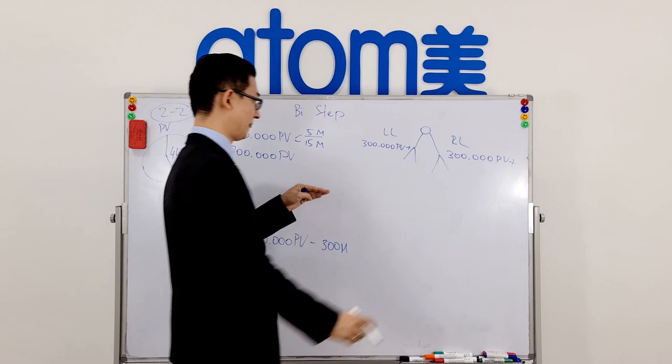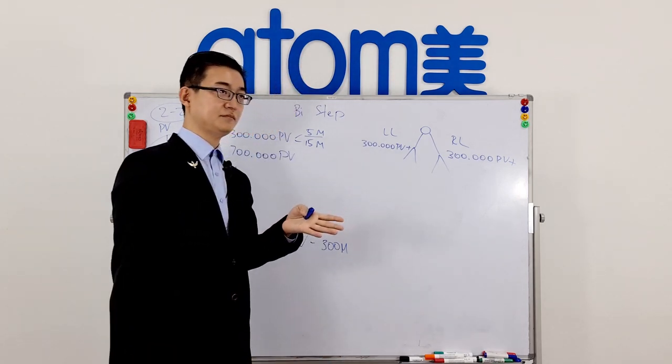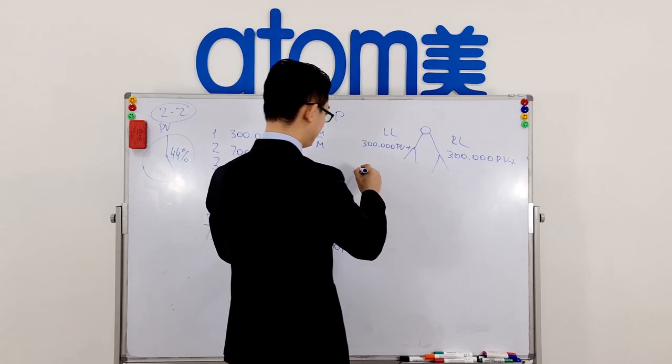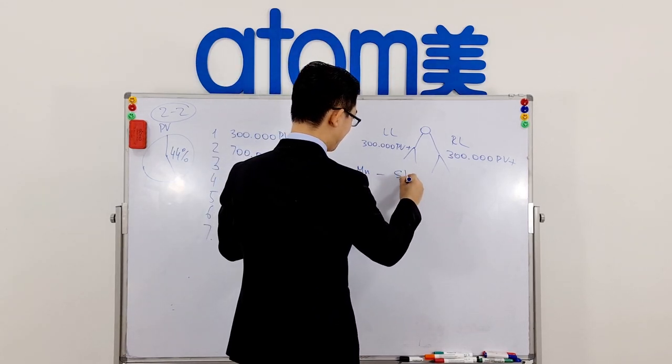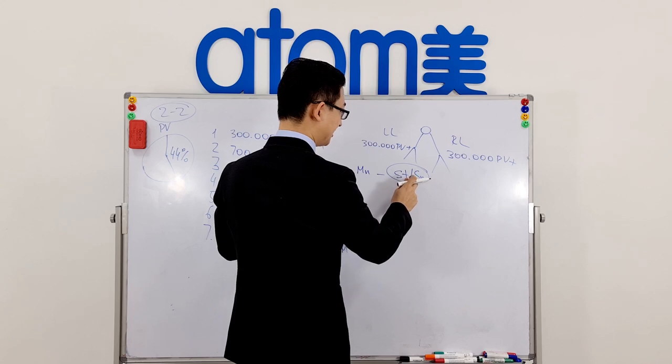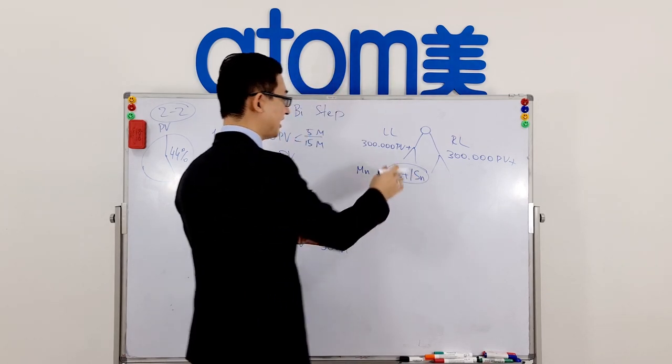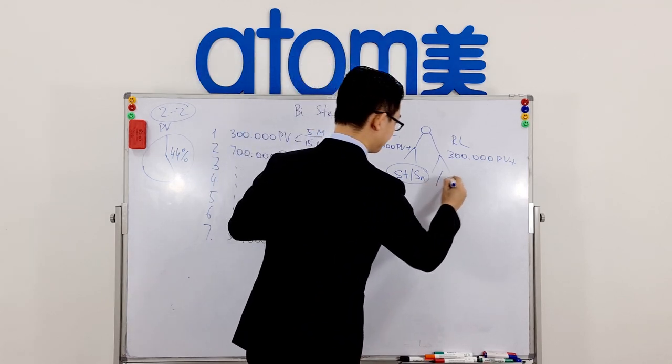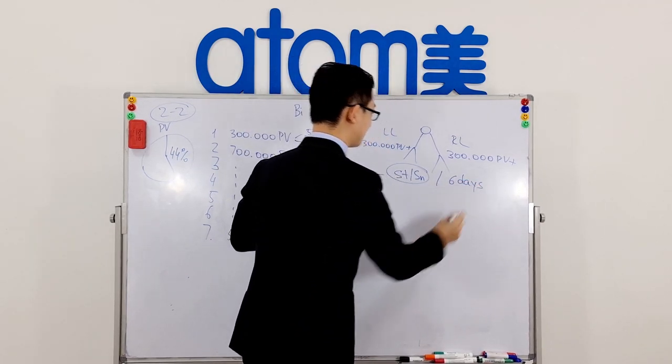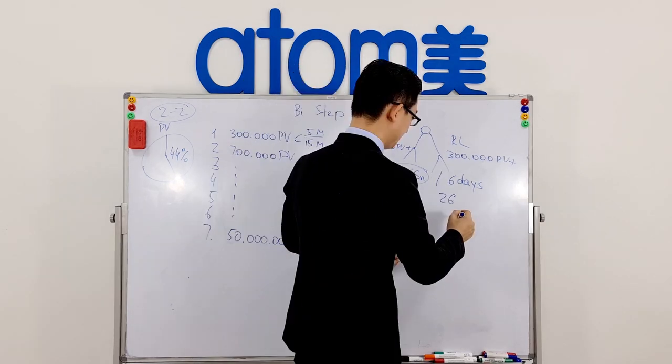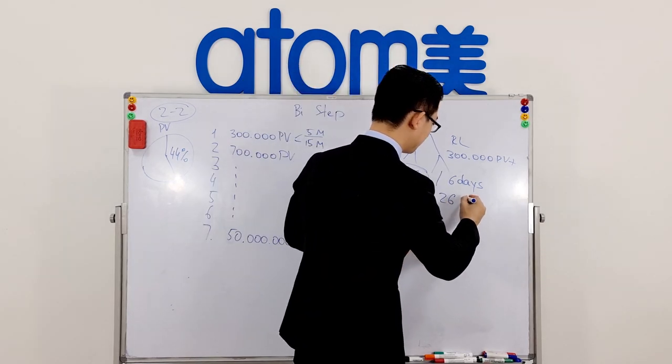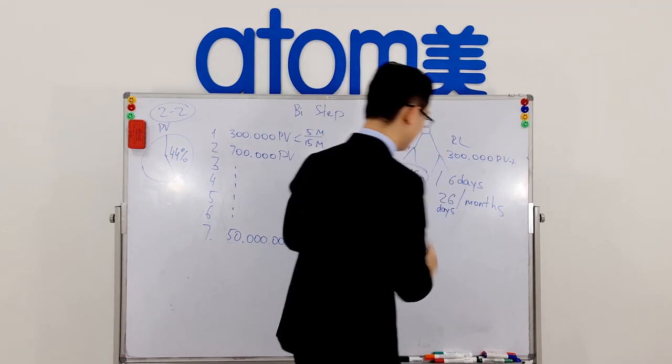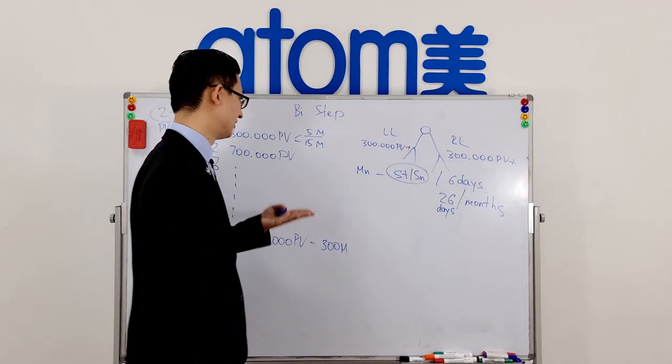You can match only one binary step per day through Monday to Saturday. Sunday is not a separate day, so Saturday and Sunday is considered as one day. In a week you have six days to match your binary steps. On average, you can have 26 binary steps per month.